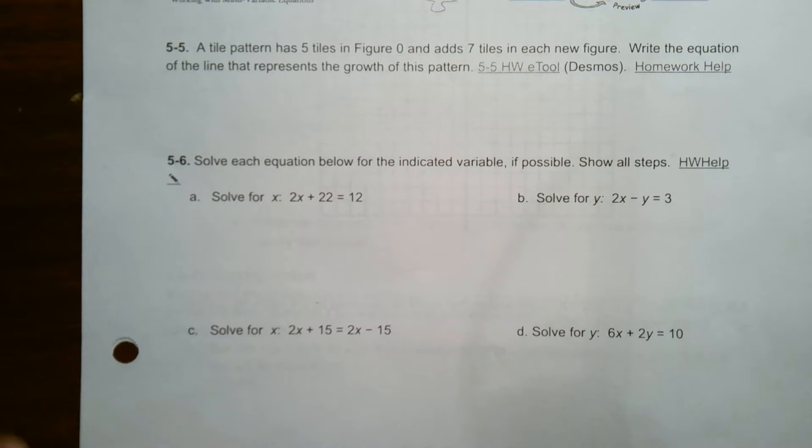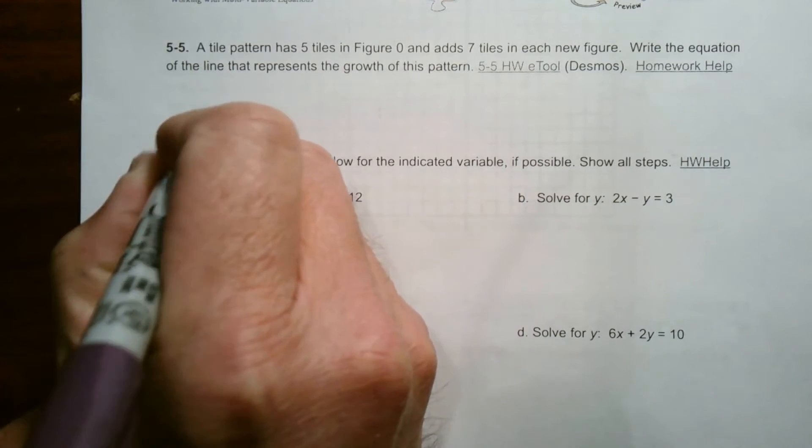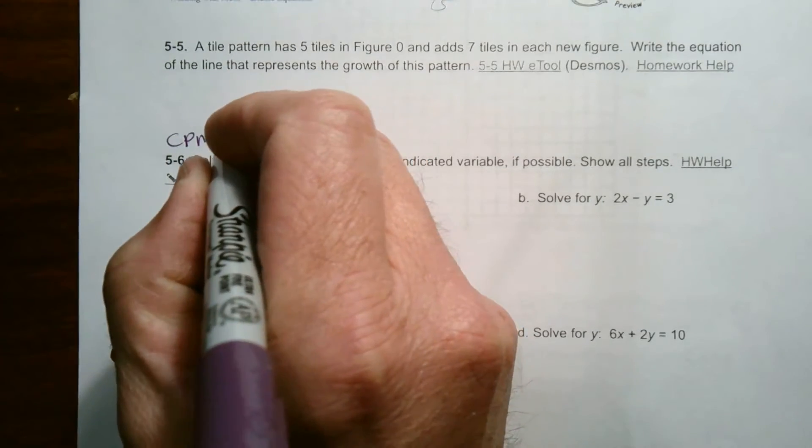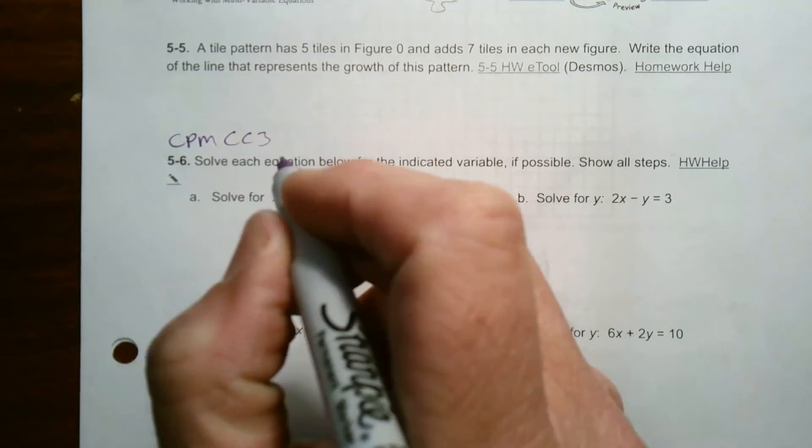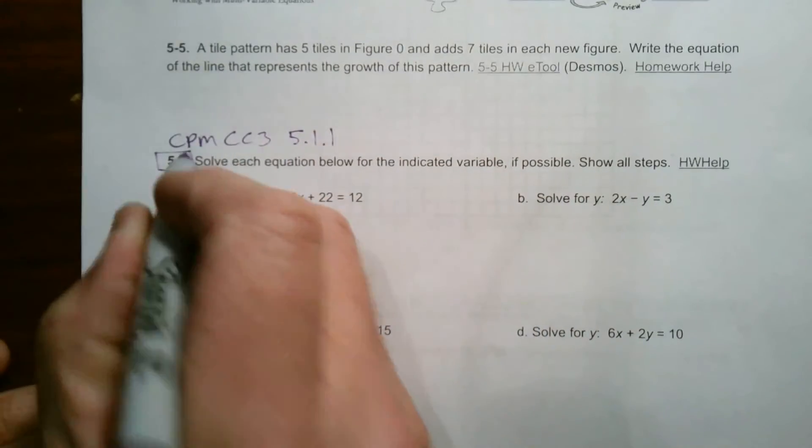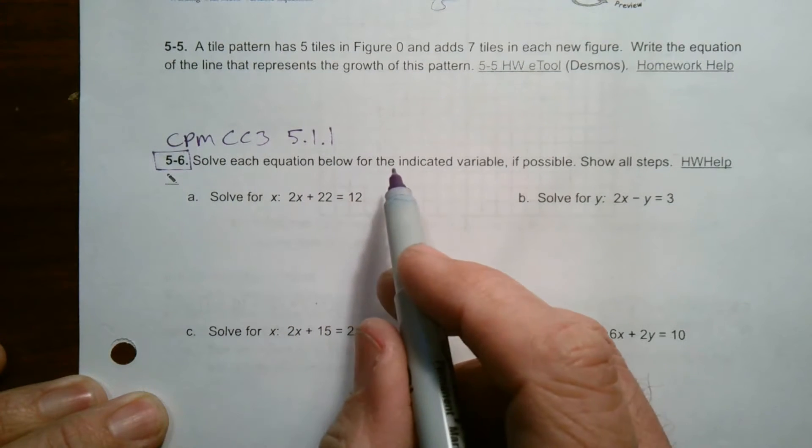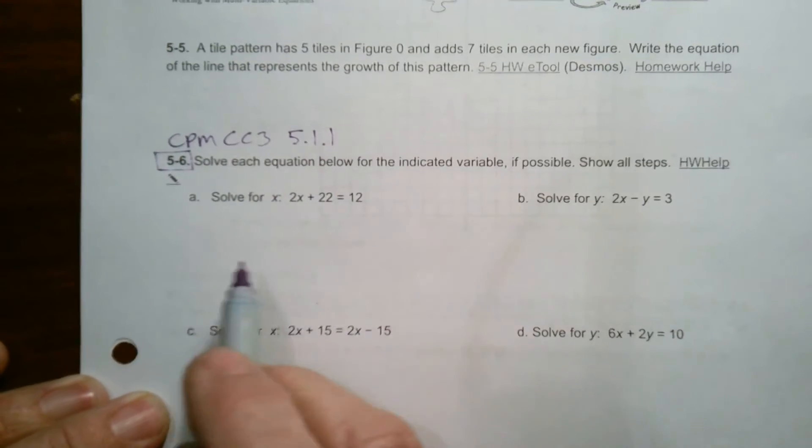Hey folks, Mr. Dell here. We are looking at solving equations for the given variable, and sometimes there are two variables within the equation and we have to isolate that variable. This problem I'm pulling from CPM, course three, CC3, section 5.1.1, specifically number 5-6. It says solve each equation below for the indicated variable if possible. Show all steps.